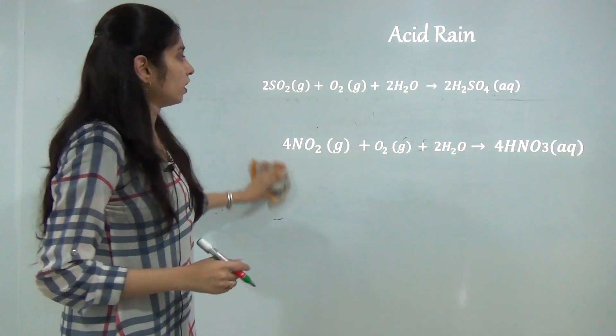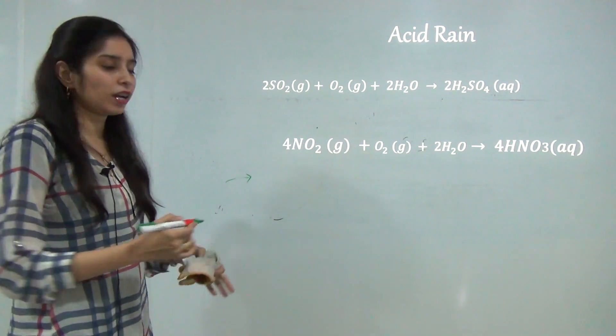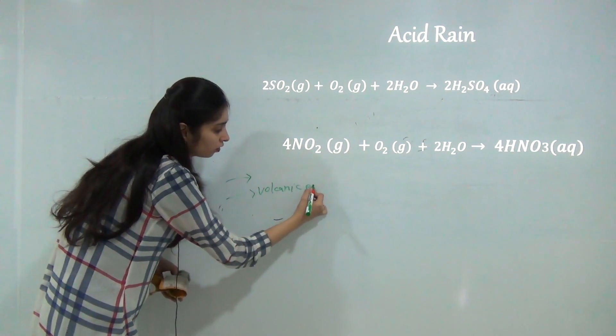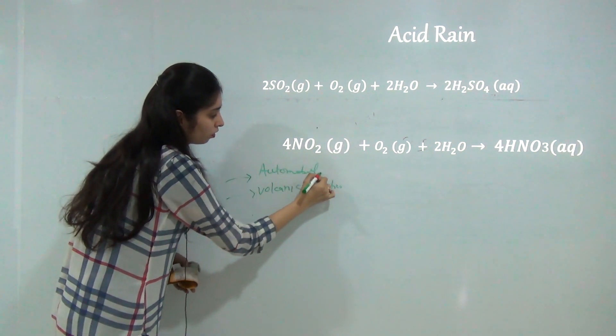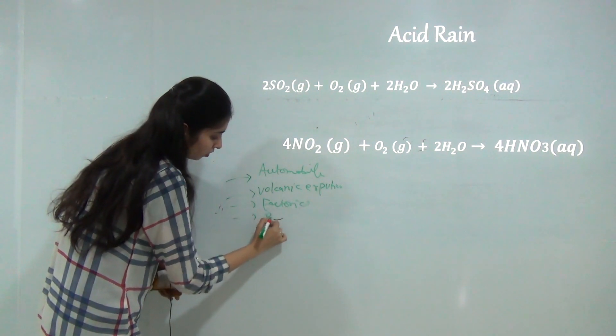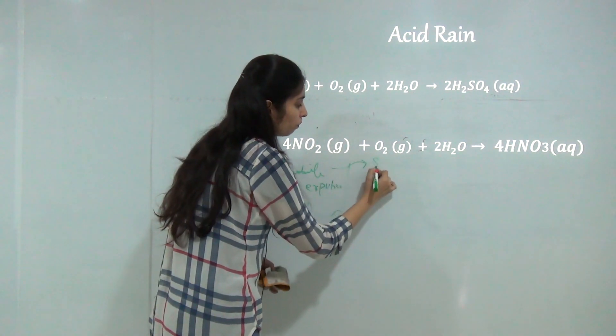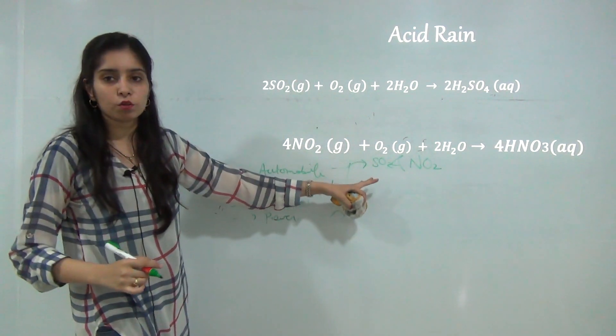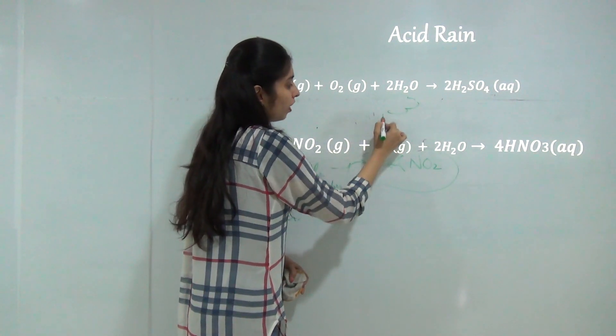In acid rain we can say simply that due to automobiles, due to air pollutants like volcanic eruptions, power plants, automobiles, factories and power plants there is a release of such pollutant gas like SO2 and NO2 in our atmosphere. These SO2 and NO2 present in our atmosphere and when rainfall occurs...